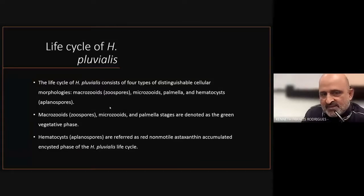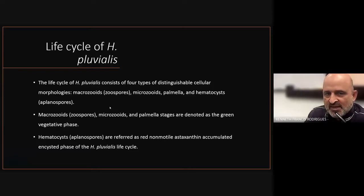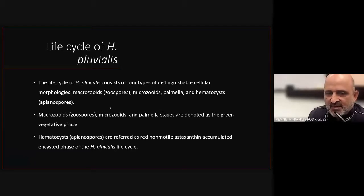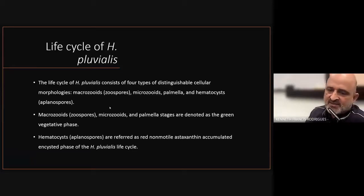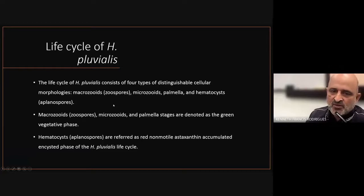Looking at the developmental cycle itself, we have four types of distinguishable cellular morphology: macrozoids known as zoospores, microzoids, palmella, and haematocysts known as aplanospores. The macrozoid, zoospore, microzoid, and palmella stages are denoted as the green or vegetative phase. Haematocysts and aplanospores are referred to as the red, non-motile, astaxanthin-accumulated, encysted phase of the life cycle of H. pluvialis. This is why the color appears red under certain conditions and green under others. An understanding of this life cycle is very important for exploiting algae for its biotechnological potential.